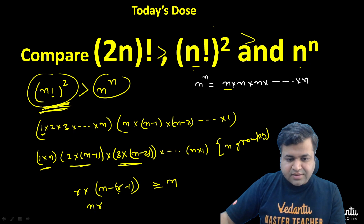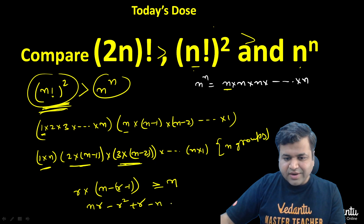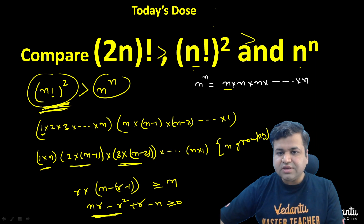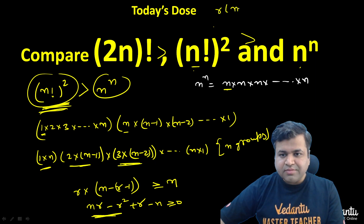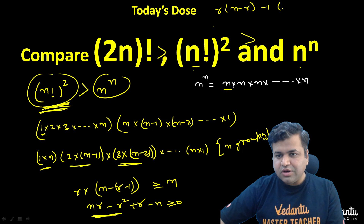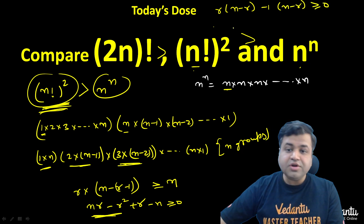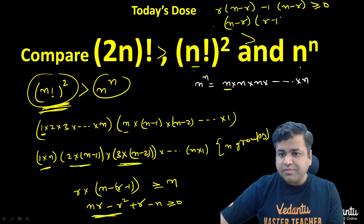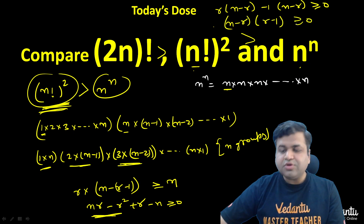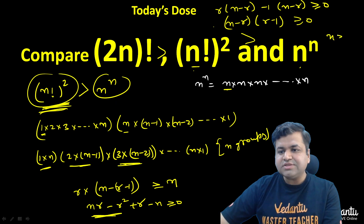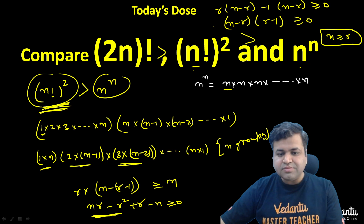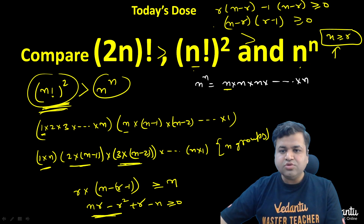We need to prove r(n−r+1) ≥ n, i.e., nr − r² + r − n ≥ 0. Moving terms to the left-hand side and factoring: (n−r)(r−1) ≥ 0. This is true when n ≥ r, which always holds in this context since r is the index running from 1 to n, so r ≤ n.